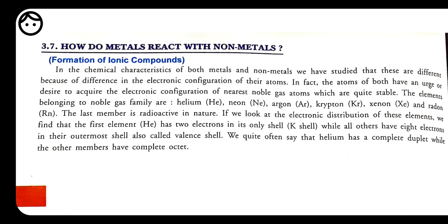When a metal and non-metal combine, they form an ionic bond. Non-metals are called acceptors of electrons — they always have a lack of one, two, or three electrons needed to complete their octet. Non-metals always try to grab electrons from other elements. When two non-metals combine, both share their electrons, and the bond formed by sharing is called a covalent bond. Covalent compounds will be discussed in Chapter 4, which is fully based on carbon compounds.